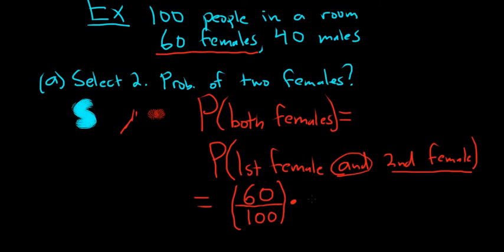Now you have to pick another female because you want the second one to be female. However, you've taken a female out, so there's only 59 females left. And there's only 99 people left. So the number goes down. These are not independent events because the probabilities change.